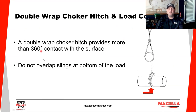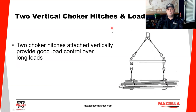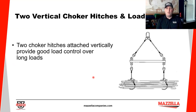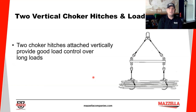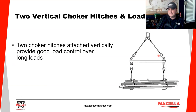A double-wrap choker hitch again gives us 360-degree contact — and we know not to overlap. Using slings with a spreader bar is a perfect application when picking a bundle of rebar, multiple pieces of steel, or moving PVC pipe — think about that sag factor. You should definitely use a spreader bar with two chokes. This is a great way to pick long-stock bundle items; it provides very good load control and depends on the rigidity of that load whether to use a single choke or double.